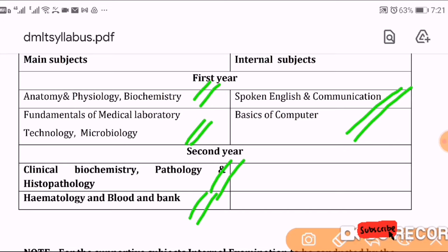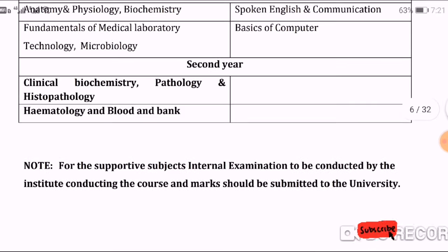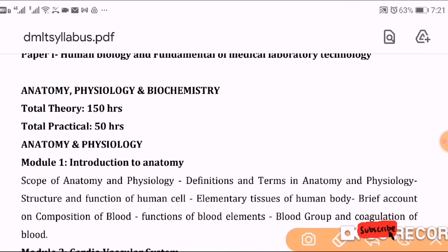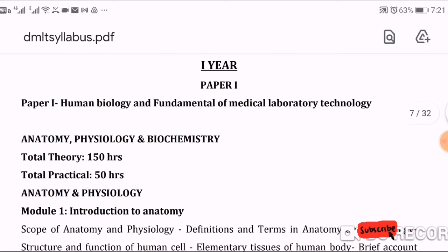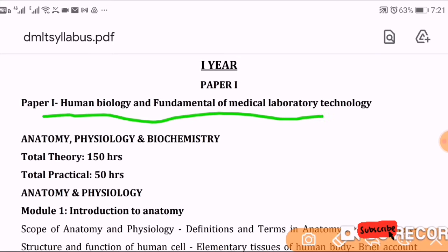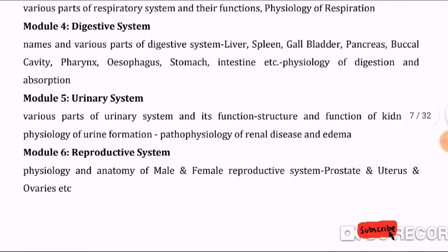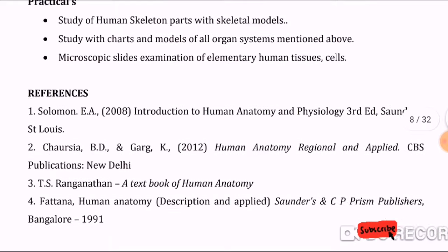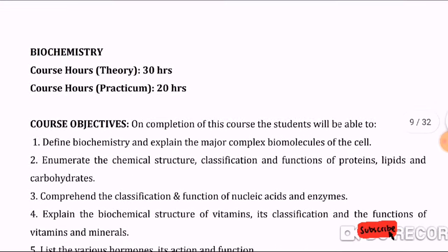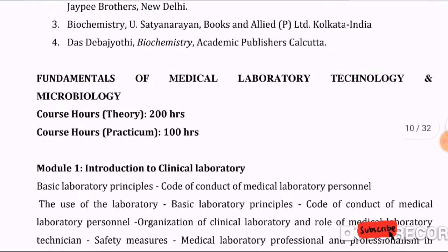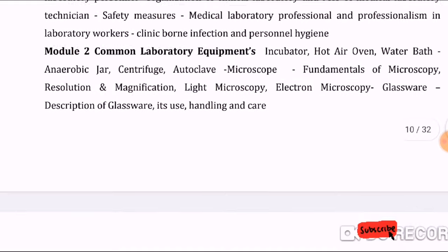Hematology and Blood Banking is a large subject. You can download the detailed syllabus from the file in the description box. The first paper covers Anatomy, Physiology, and Biochemistry — including body systems. The course is focused on medical laboratory work: processing tests, interpreting results, working with equipment, identifying bacteria and viruses, and performing diagnostic tests.